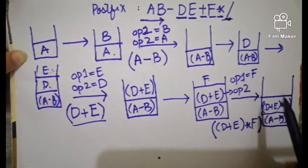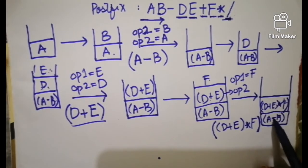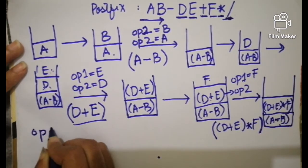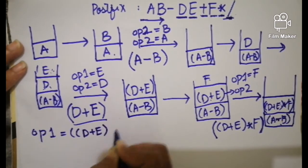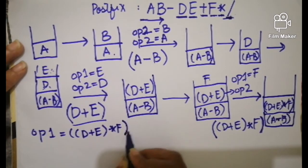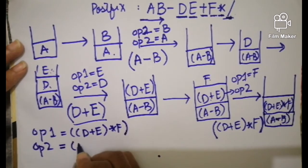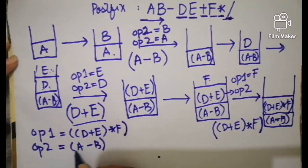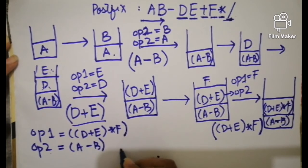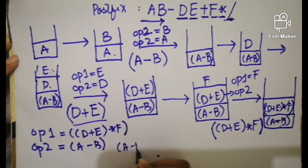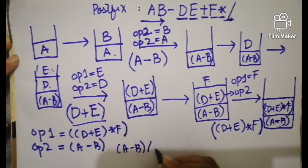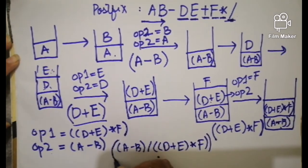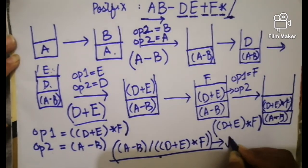There is again an operator, so when an operator comes we pop these two from the stack and place the division operator between them. Operand one is (d + e) and operand two is (a minus b). We place the operator between them: operand two, operator, operand one. Place the brackets around the full expression. This is our final infix expression.